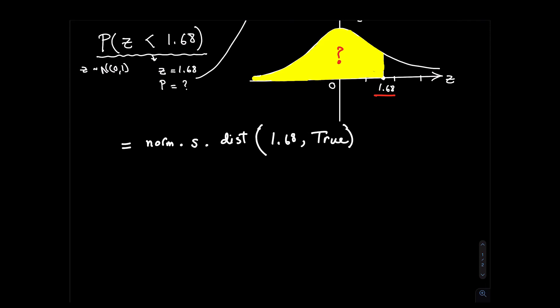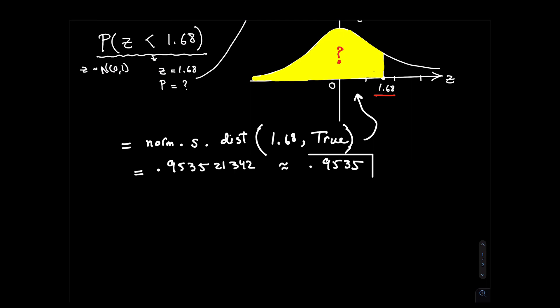That command gives you the yellow area — the area less than 1.68. If you type that in Excel and press enter, you'll get 0.953521342. For this module, we always go with four decimal places as the final answer, so 0.9535 is the final answer. The probability that Z is less than 1.68 is 0.9535, which is about 95%.